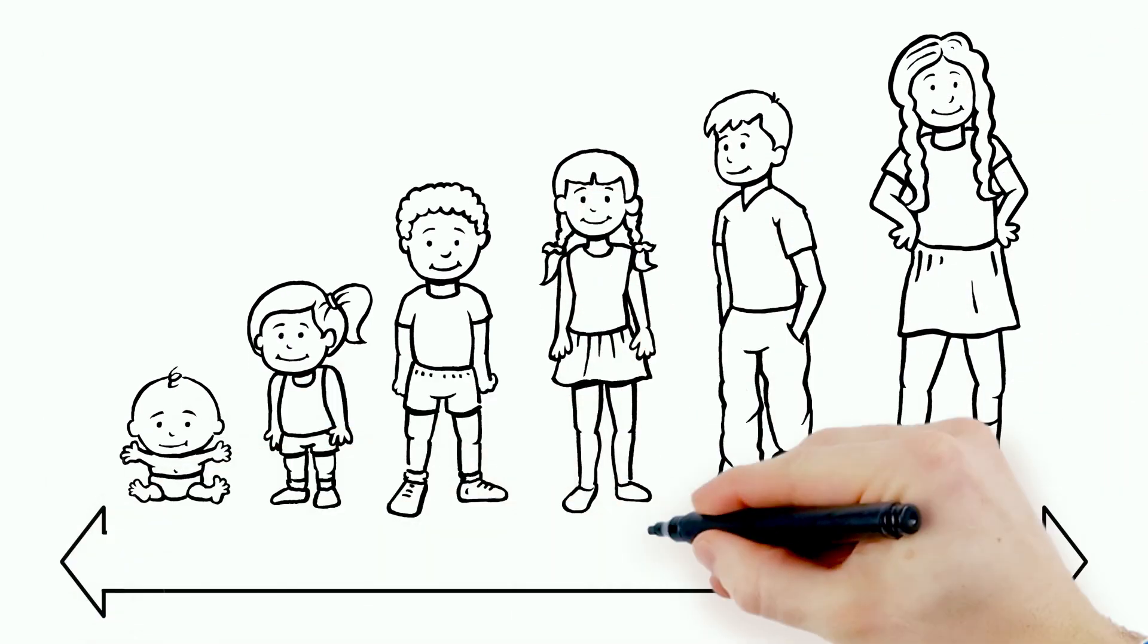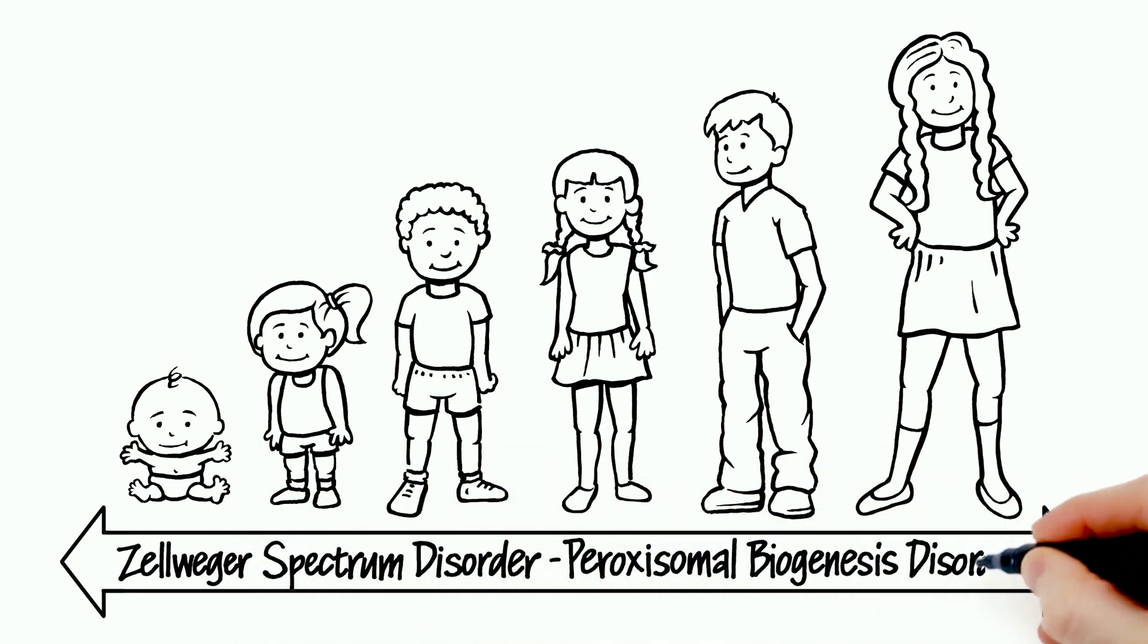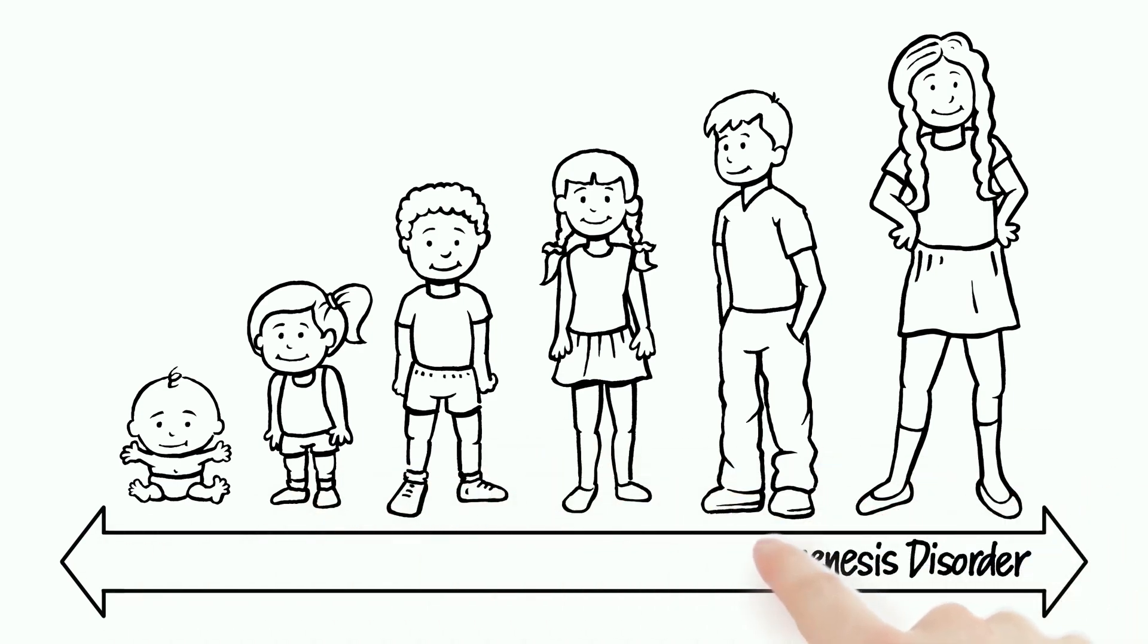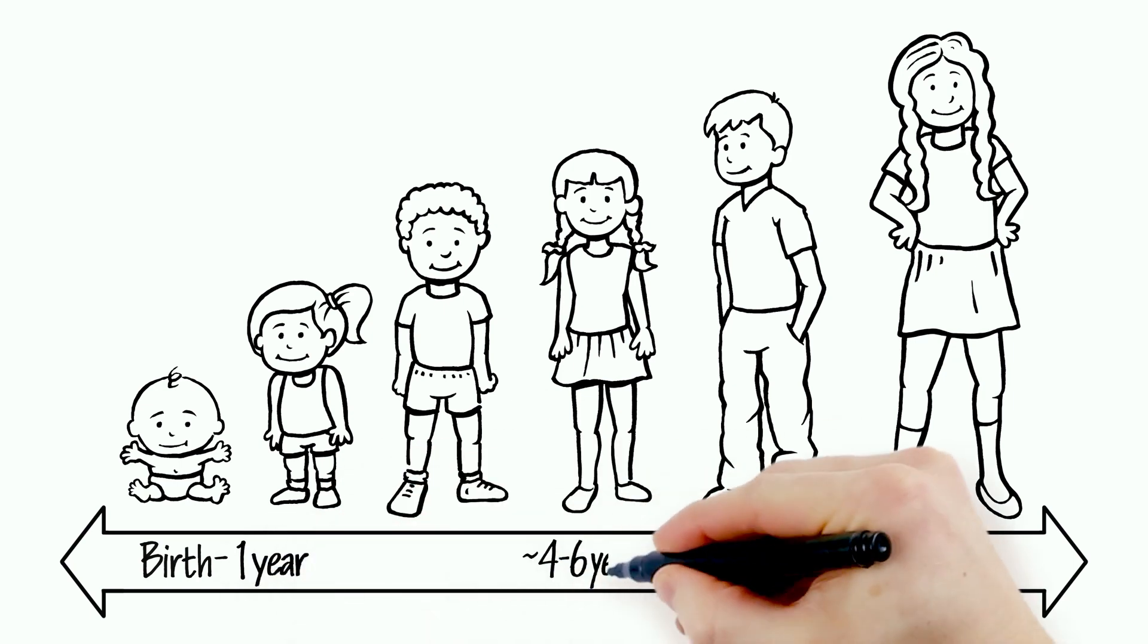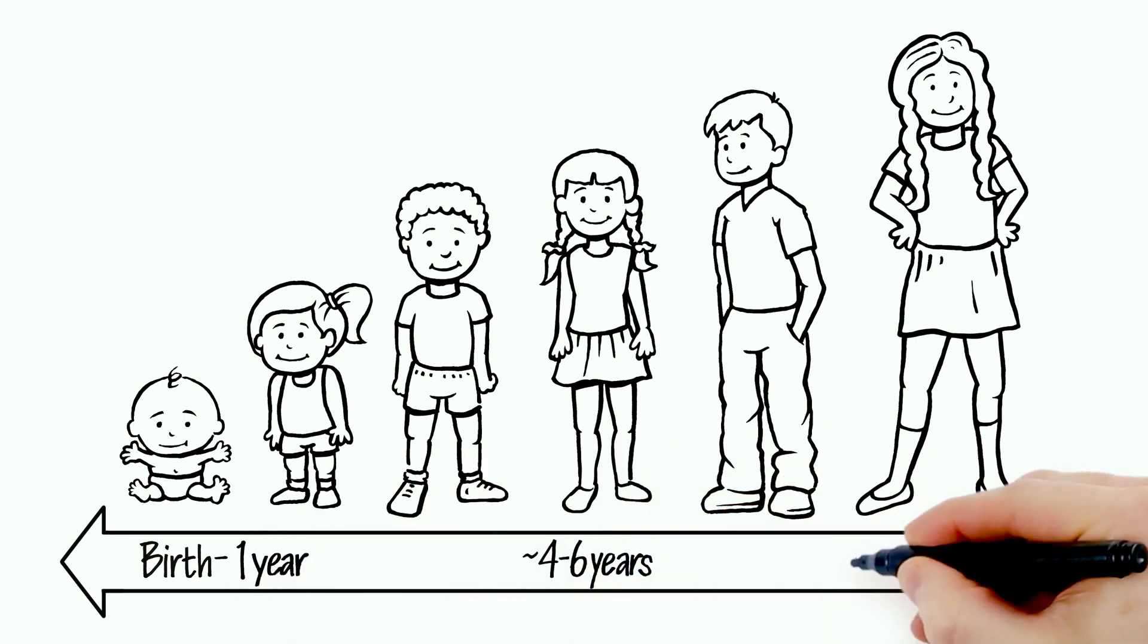These differences can make diagnosing PBD-ZSD challenging. Those with severe forms are likely to be diagnosed early, whereas milder forms may not be recognized until childhood or even adolescence.